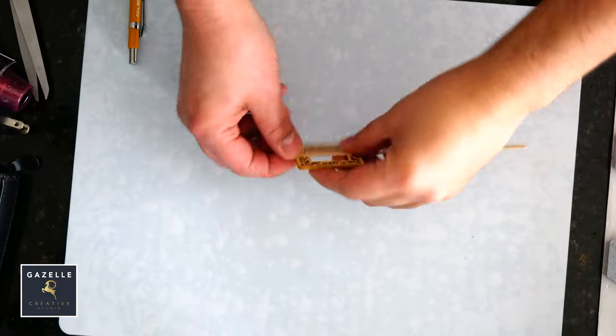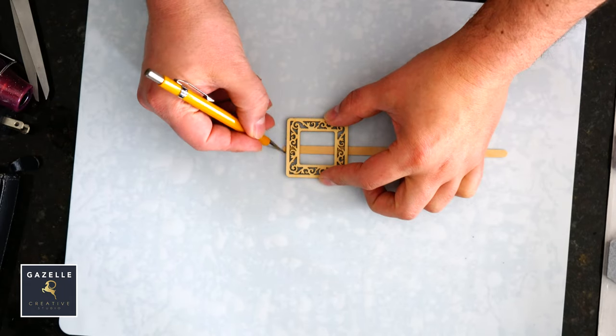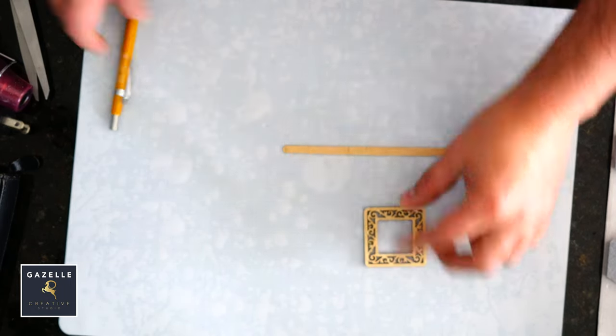To create the buckle, I will cut the wooden stick to size and glue the pieces together using tacky glue.